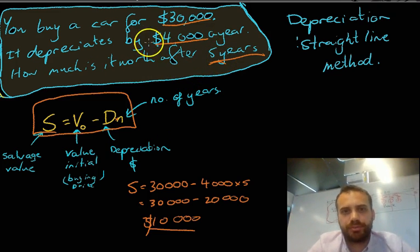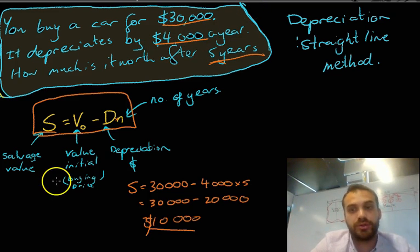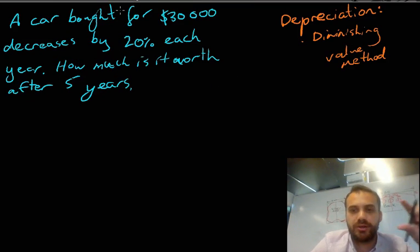The difference, this has depreciation as a dollar value. $4,000, $4,000, $4,000. It loses $4,000 every year. This one has depreciation as a percentage. It decreases by 20% each year.